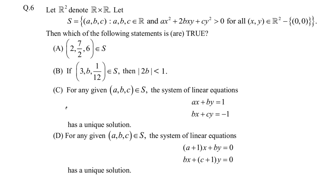Hello students. Aaj hum 2024 JEE Advanced Paper 1 ka Question No. 6 discuss karein. Let R² denote R cross R. Let S = {a,b,c} such that a,b,c belongs to R and ax² + bxy + cy² > 0 for all (x,y) belonging to R² minus {(0,0)}. Then which of the following statements are true?